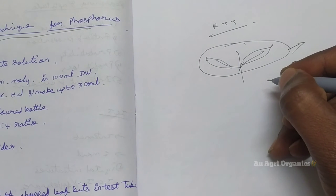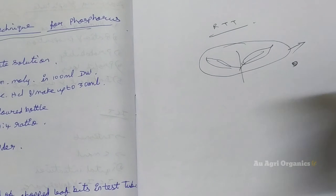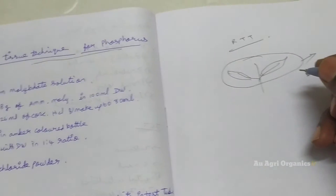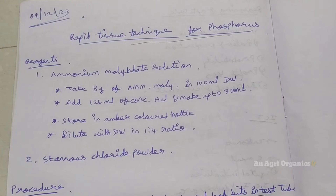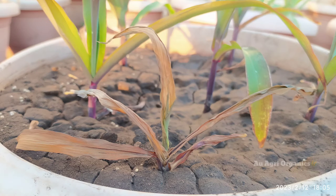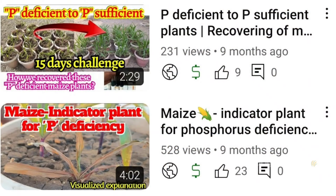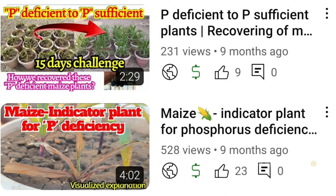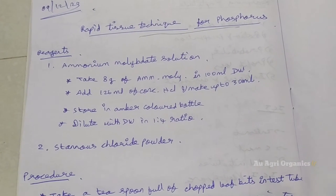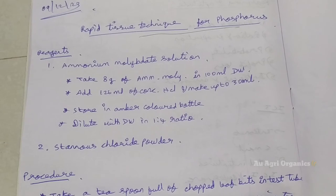This Rapid Tissue technique is available for most of the plant essential nutrients. In this video, we will see about Phosphorus. I did this procedure about one year ago when my maize plant showed a deficiency symptom of Phosphorus. You may know that maize is the indicator plant for Phosphorus deficiency. I have uploaded that video in our channel also. Now I am uploading this procedure with the exact steps. You can watch up to the end of this video.